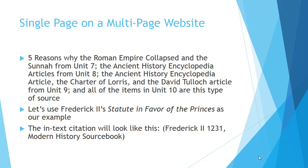One of the documents in unit ten was Frederick II's Statute in Favor of the Princes. Let's use that as our example. That comes from the Medieval History Source Book — an electronic collection of sources run by Fordham University, collecting primary and good secondary sources as a resource for teachers and students. So the in-text citation for Frederick II's document will look like this: Frederick II — the author — 1231 — the year, given both in the module title and on the document itself. And then, because it's a website with no page numbers, you give me the name of the website: the Medieval History Source Book.